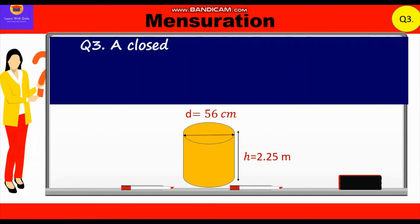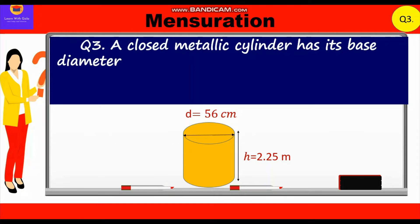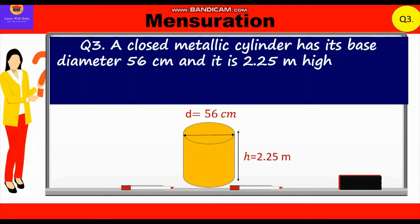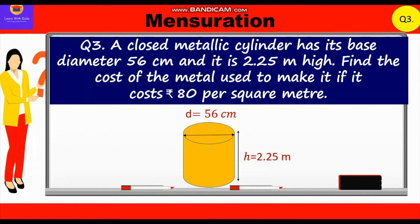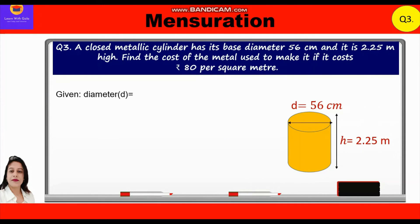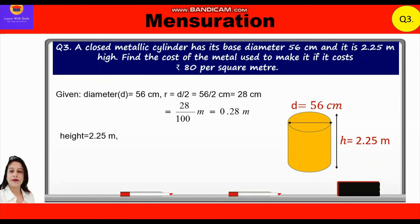Question 3. A closed metallic cylinder has its base diameter 56 cm and is 2.25 m high. Find the cost of metal used to make it if it costs rupees 80 per square meter. Given: diameter = 56 cm, so radius = 28 cm = 0.28 m. Height = 2.25 m. Cost = ₹80 per m².